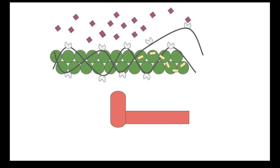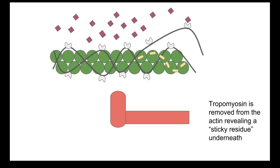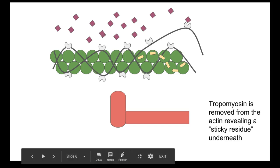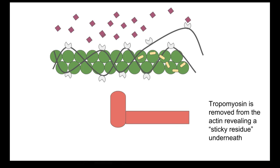If you've ever had a piece of tape on something for a long time — when you peel it off, the stickiness stays on. That's what's going to have the myosin head attached to it. It's going to be a bonding site — molecular structures that allow the myosin head to actually bond to it. I'm using the metaphor of sticky residue.